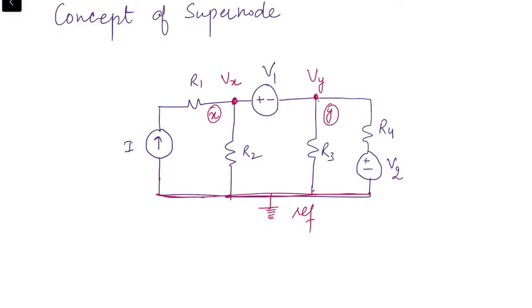When we try to apply KCL, we know the current in the branch with the current source is I, flowing in the upward direction. We can calculate the current through resistance R2 as VX over R2. However, when we come to the branch containing voltage source V1, we don't know the resistance of that branch, so we can't write the current — writing it as potential difference divided by resistance gives infinity, which is not possible. So we are not able to apply KCL to node X.